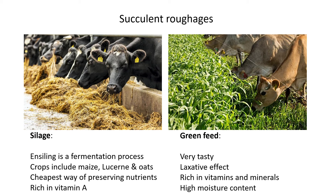Silage is also rich in vitamin A. The last roughage type is green feed — literally allowing the animal to eat off the land, as shown in the picture. It's very tasty with good water and sugar content, but unfortunately has a high laxative effect. If animals graze on green feed excessively for the entire day over a week, they can develop diarrhea. It should be managed to a few hours per day, with animals then given dry feed. It is rich in vitamins and minerals and has a high moisture content.